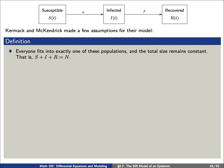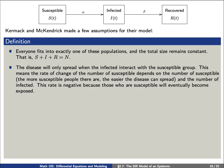Next, the disease will only spread when the infected interact with the susceptible group. That means the rate of change for the number susceptible depends on the number of susceptible—the more people who are susceptible, the easier the disease can spread—and the number of infected. This rate is negative because those who are susceptible will eventually leave this group and become infected.